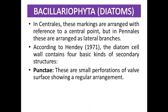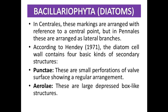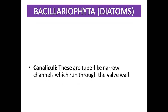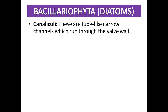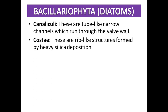The four secondary structures are: punctae — small perforations of the wall surface showing irregular arrangement; areoli — large, depressed, box-like structures; portulae — tube-like narrow channels which run through the wall; and costae — rib-like structures formed by heavy silica deposition.